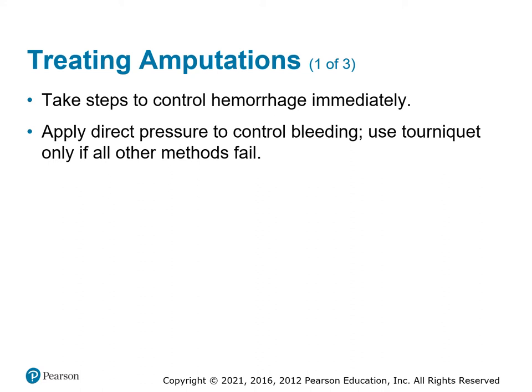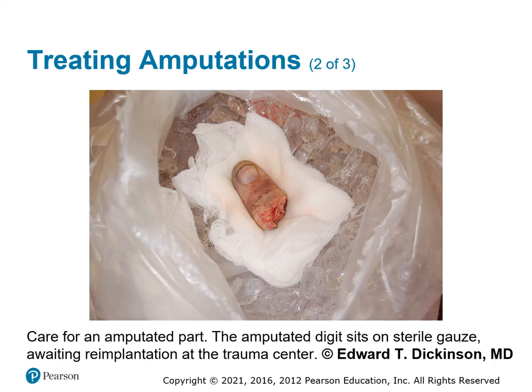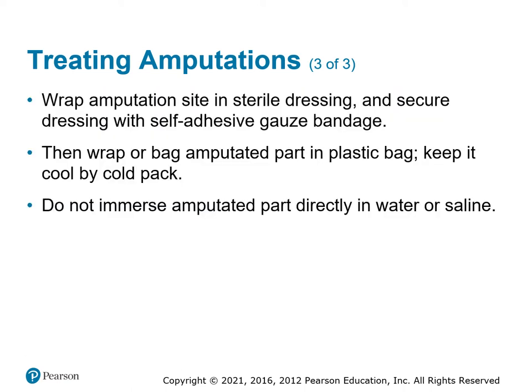Control the hemorrhage, and if you have to use a tourniquet, make sure you're saving the patient over the body part. For amputations, place the amputated part on ice but not directly — wrap it in moist gauze and then put it in a bag of ice so it stays cold. There's a great history of reattaching body parts — a kid from Michigan lost both arms in a farming accident and they were reattached. Bring the body parts to the hospital, label them so they don't get mixed up with the wrong patient.